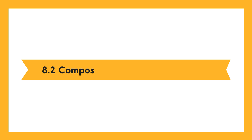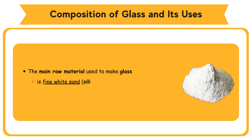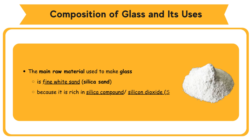The main raw material used to make glass is fine white sand. It is also known as silica sand because it is rich in silica compound or silicon dioxide, SiO2. Silica or silicon dioxide, SiO2, is the main component in glass.